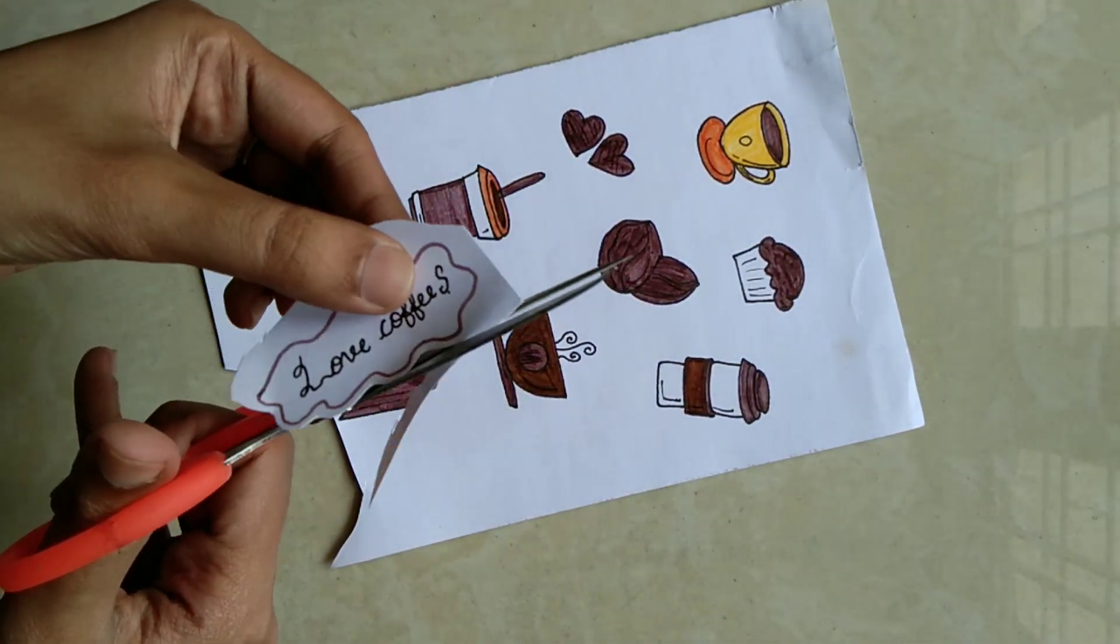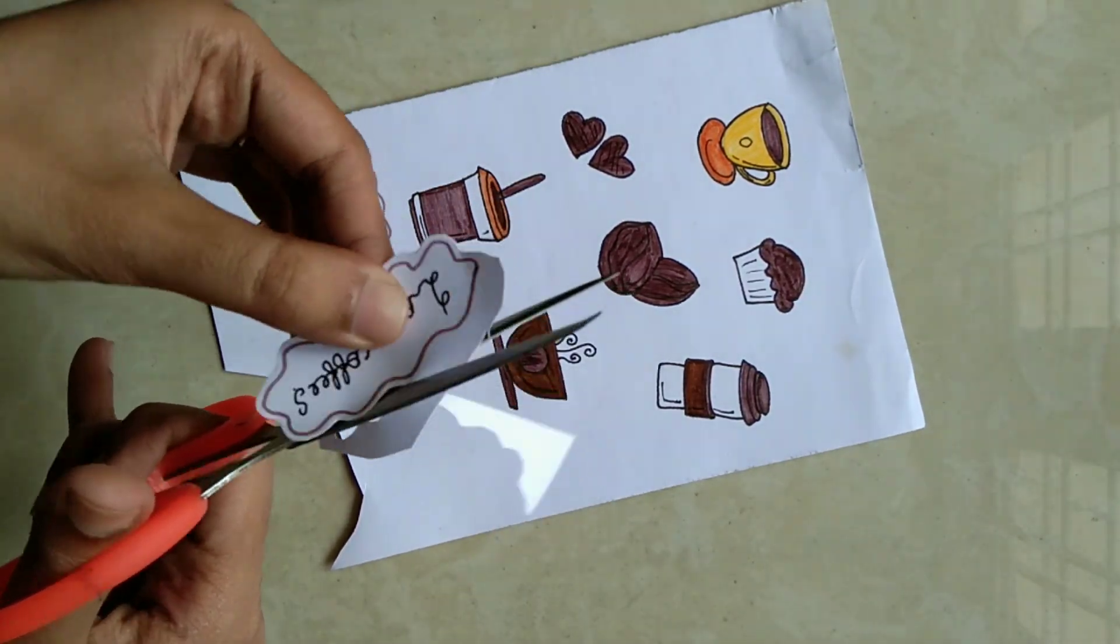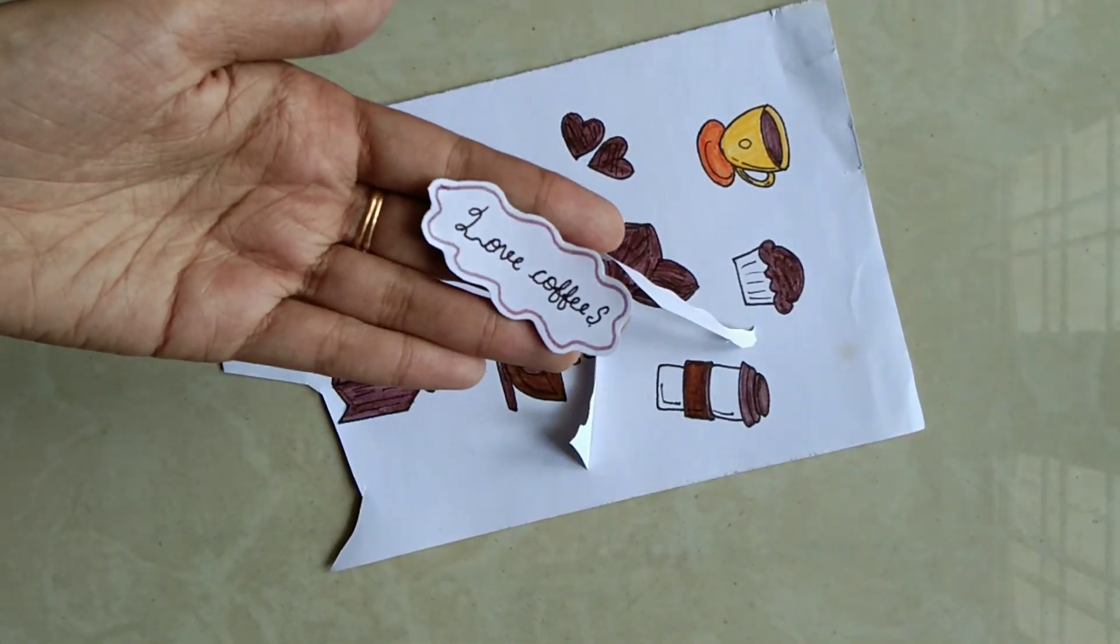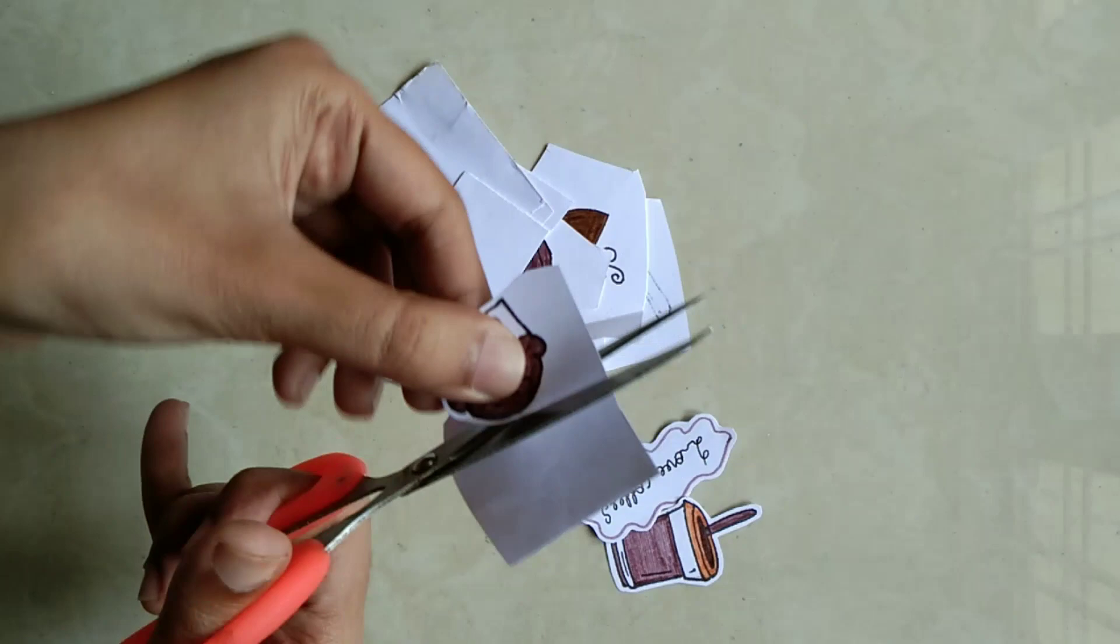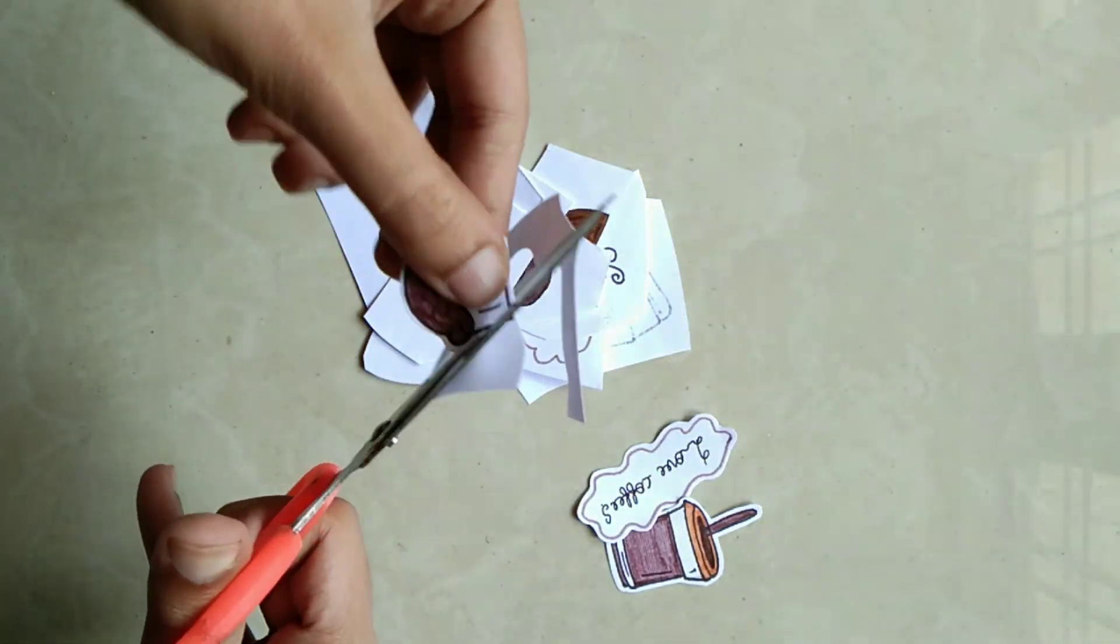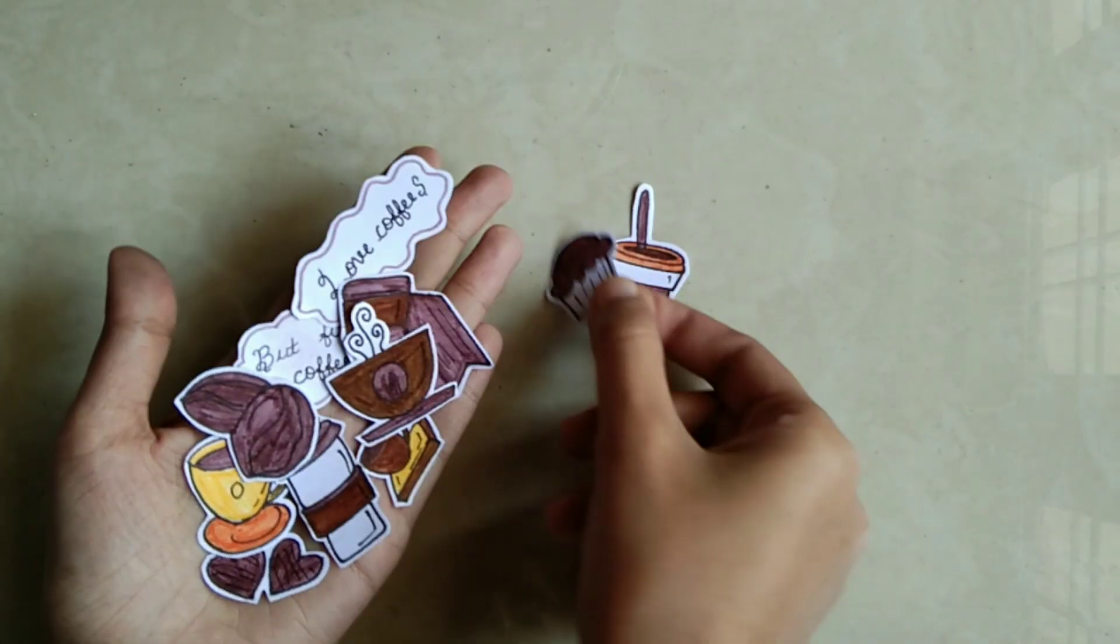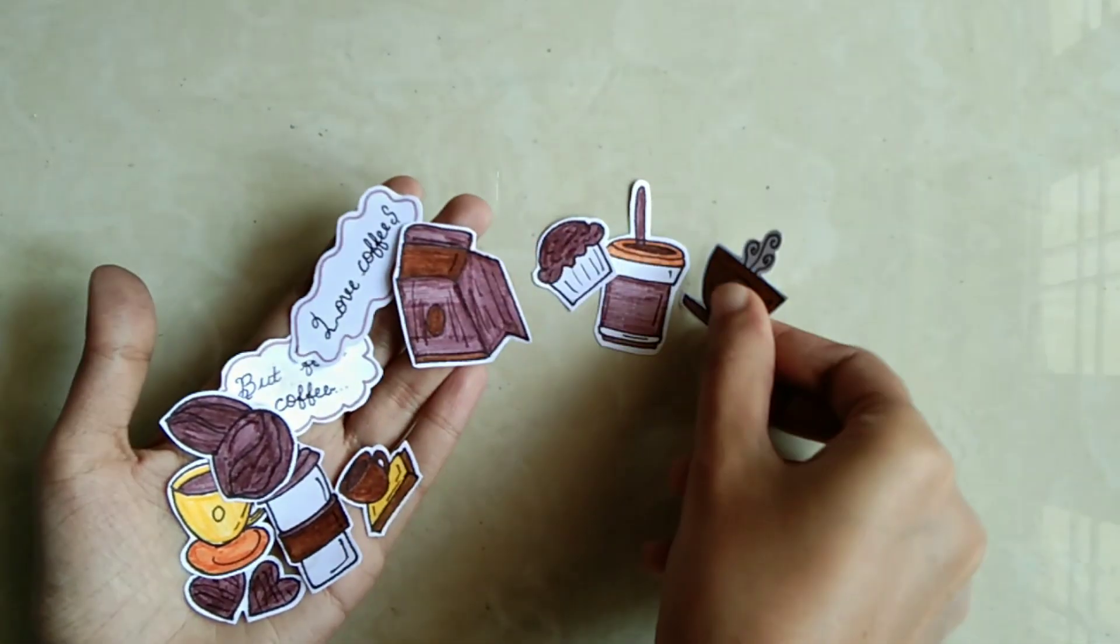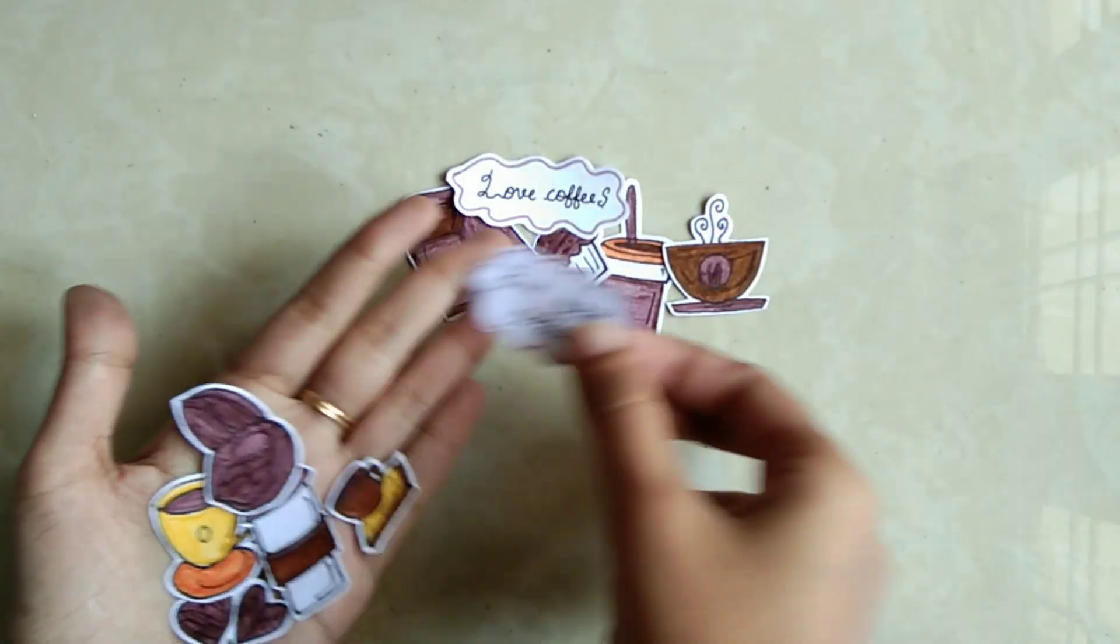I will show you a transparent sheet for the stickers. I've already uploaded this video. It's not a cello tape or double-sided tape type. You can glue it with a little glue. We are ready with our stickers. These are very useful items.